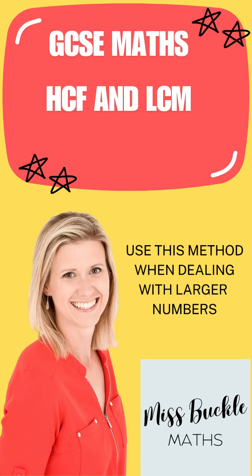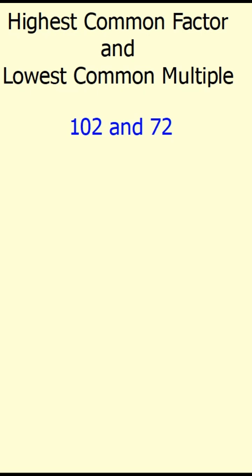GCSE Maths students, can you find the highest common factor and lowest common multiple of larger numbers? Use prime factorization when you're trying to find the highest common factor or lowest common multiple of larger numbers. So we start by doing the prime factorization of both numbers, 102 and 72.